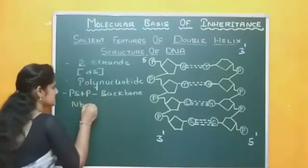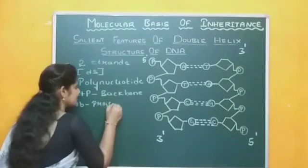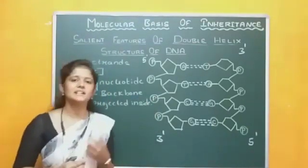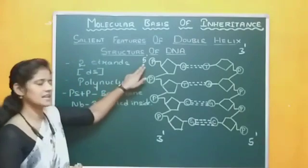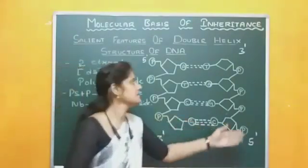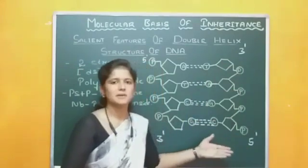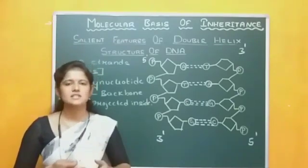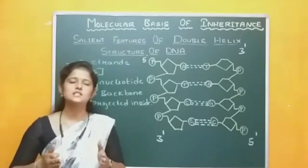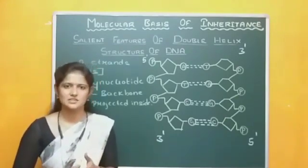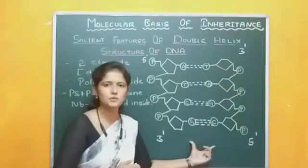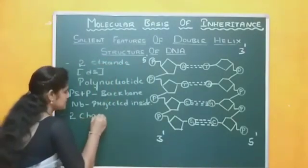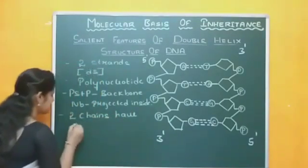The two strands have anti-parallel polarity, meaning one strand runs from 5' to 3' and the other strand runs from 3' to 5'. That is what is meant by anti-parallel polarity. We can compare it with a spiral staircase — when climbing up the staircase with two railings, the two railings move parallel to each other without crossing. Similarly in DNA, the two strands move parallel to each other. The two chains have anti-parallel polarity.